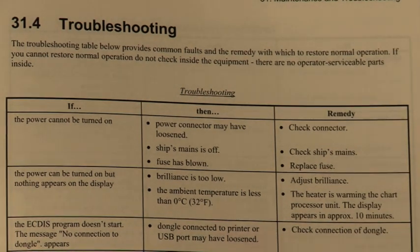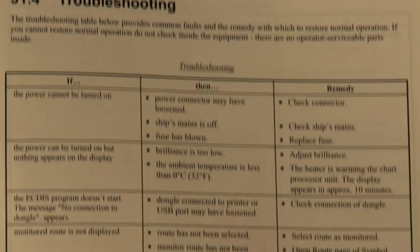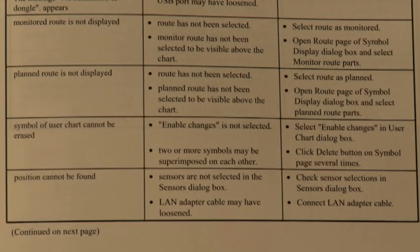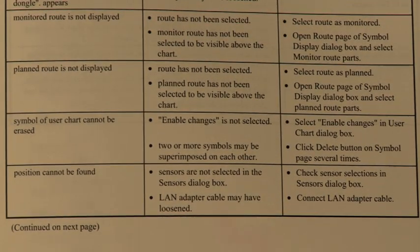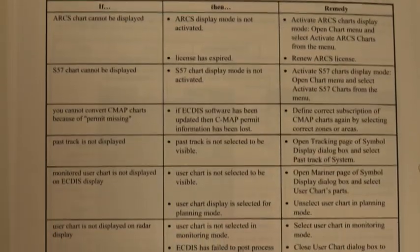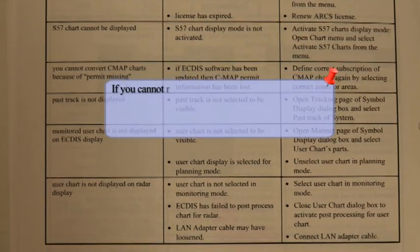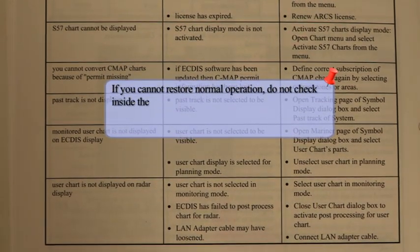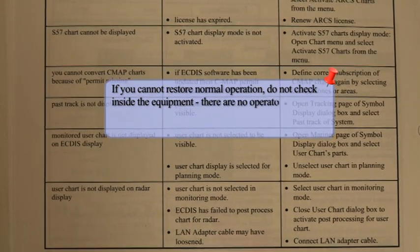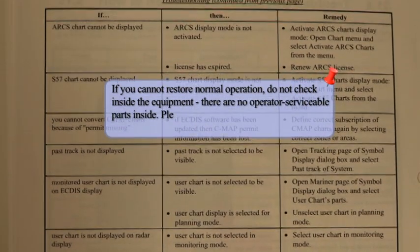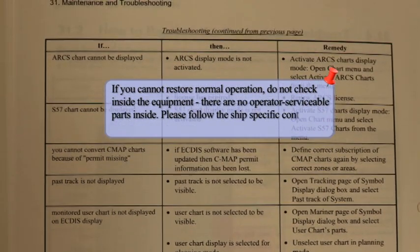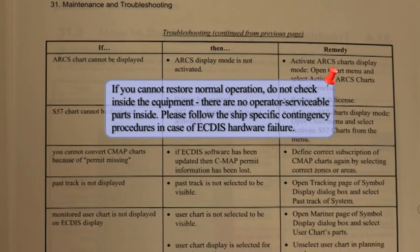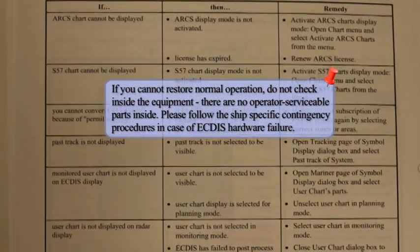Troubleshooting. Please refer to the equipment manual for the troubleshooting tables which provide common faults and the remedy to restore normal operation. If you cannot restore normal operation, do not check inside the equipment — there are no operator serviceable parts inside. Please follow the ship-specific contingency procedures in case of ECDIS hardware failure.